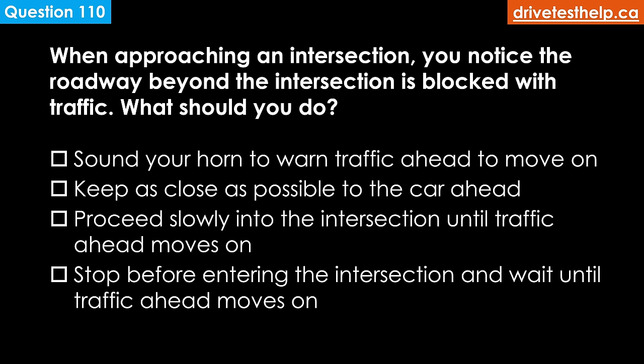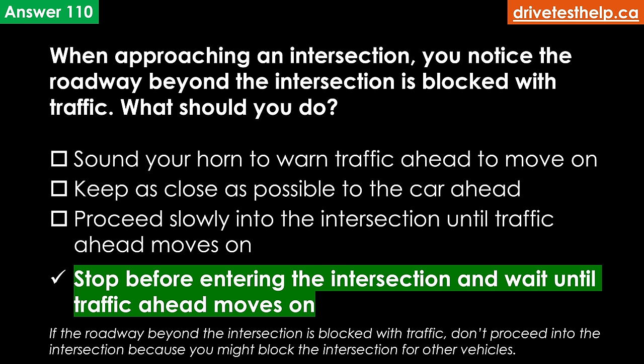When approaching an intersection, you notice the roadway beyond the intersection is blocked with traffic. What should you do? Options: sound your horn to warn traffic ahead to move on; keep as close as possible to the car ahead; proceed slowly into the intersection until traffic ahead moves on; stop before entering the intersection and wait until traffic ahead moves on. The correct answer is stop before entering the intersection and wait until traffic ahead moves on. If the roadway beyond the intersection is blocked, don't proceed because you might block the intersection for other vehicles.